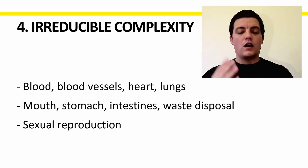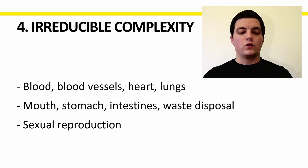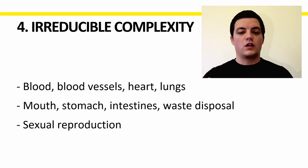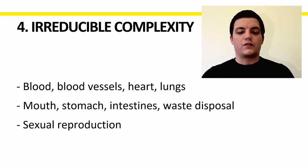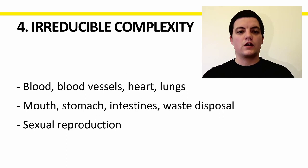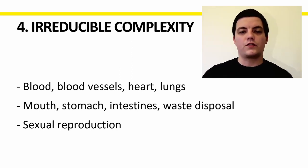Fourthly, the idea of irreducible complexity. If you think of the human body and how we apparently went from the goo to you via the zoo — from a single-celled organism to a double-celled organism to a tadpole, fish, frog — we have to wonder how some of these things evolved. If you think of our blood, blood vessels, hearts, and lungs: which evolved first? If it was our blood, how did it stay in our bodies and pump around? If we had blood and blood vessels but no heart, how did it move? If we had a heart pumping but no blood to pump, what purpose does that serve?